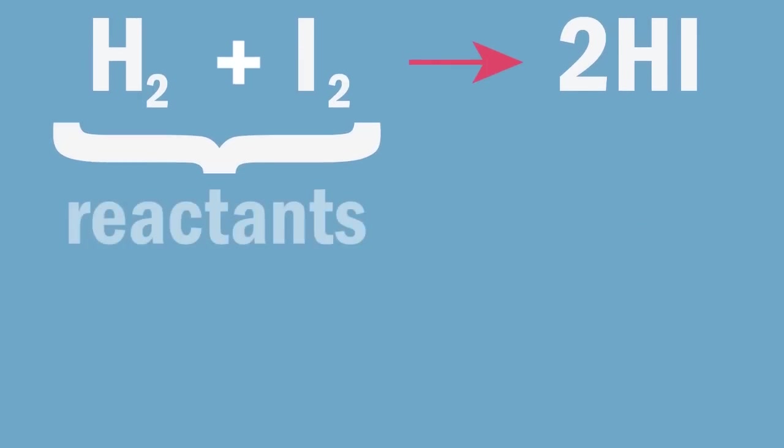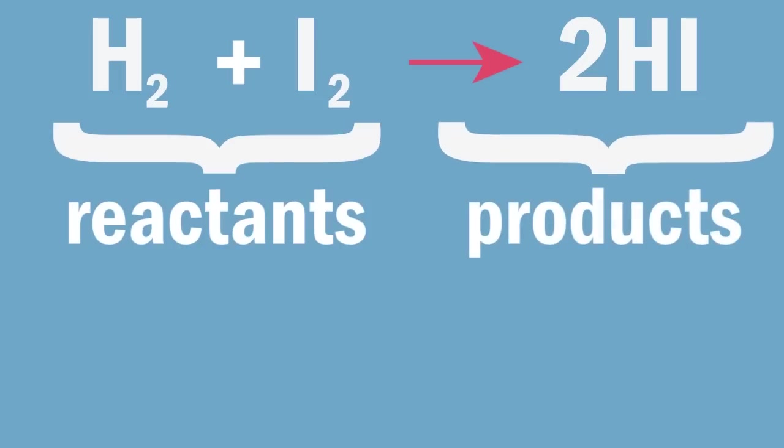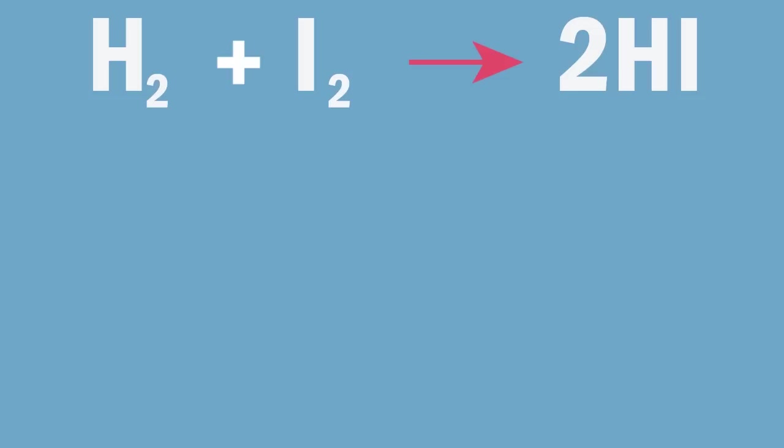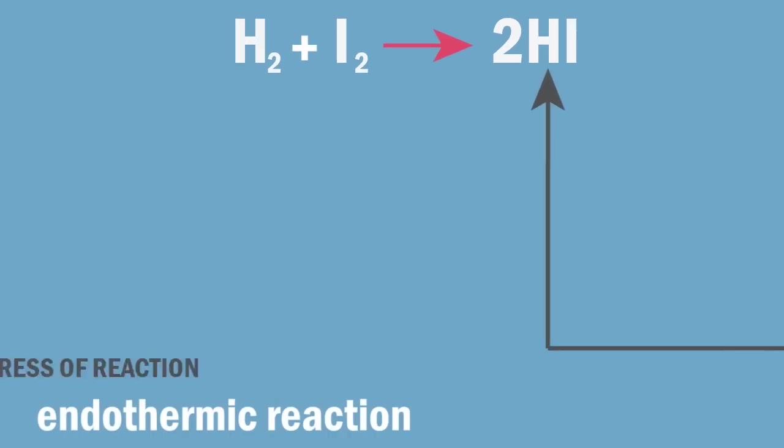The reactants are what react and are on the left-hand side of the arrow in the equation, and the products are what are produced in the reaction and are on the right-hand side of the arrow in the equation. We can represent what happens in this reaction by the diagram.